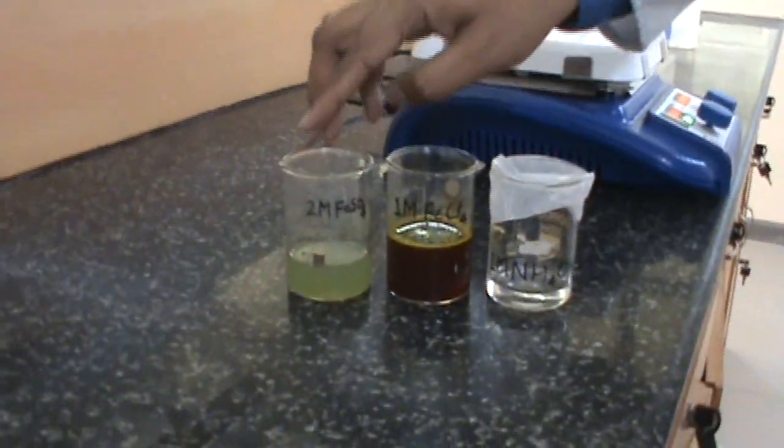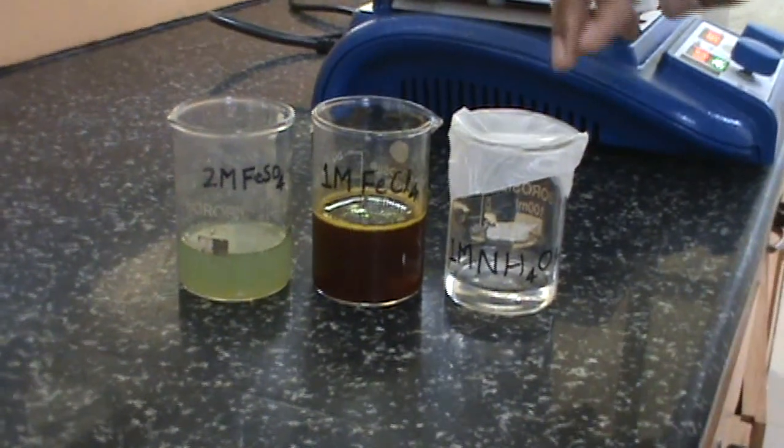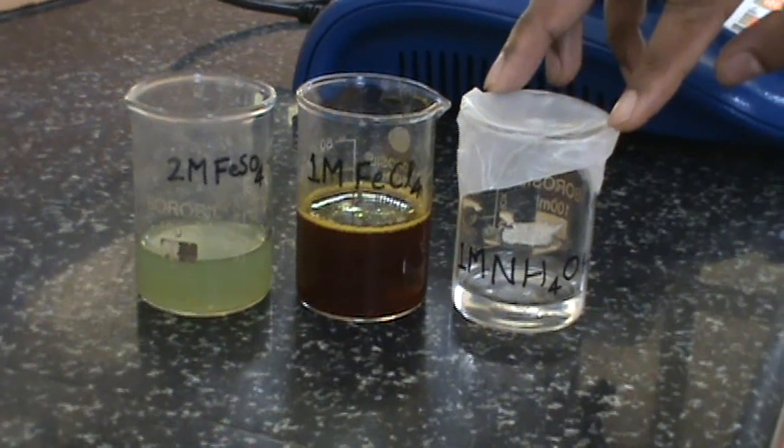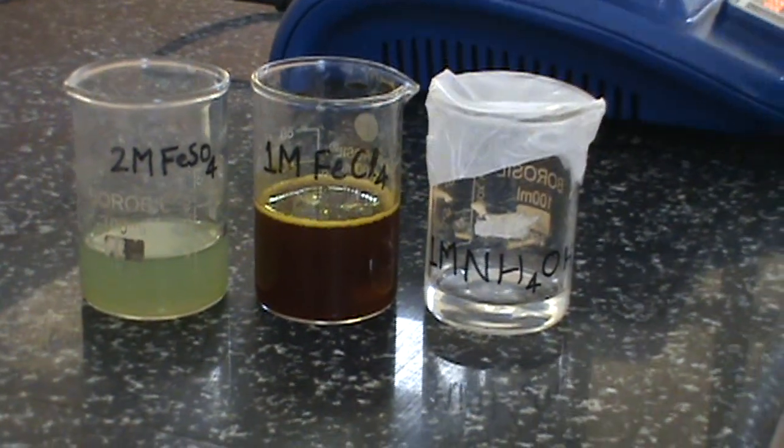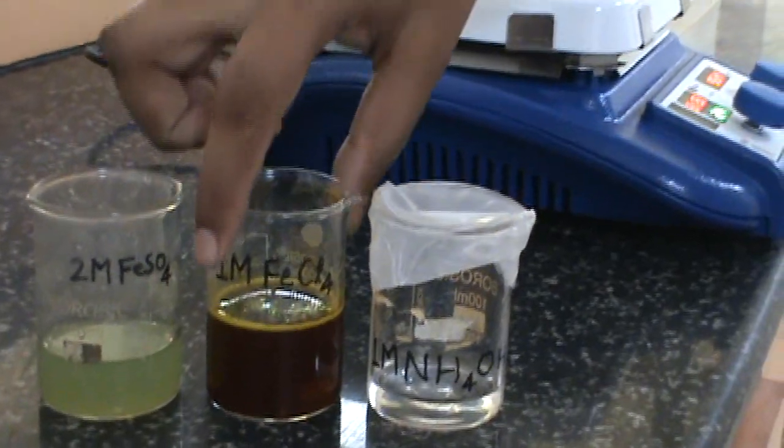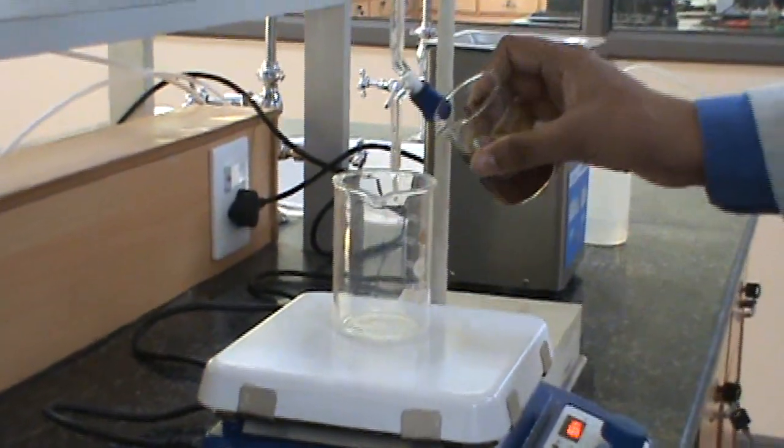We have here two molar FeSO4 solution, one molar FeCl3 solution, and to precipitate out the iron oxide we have ammonium hydroxide. To begin with, we will take FeCl3 solution.